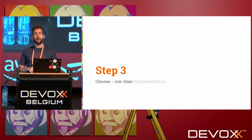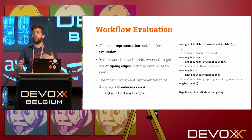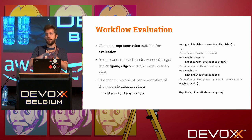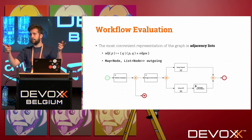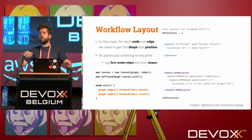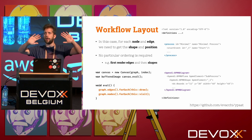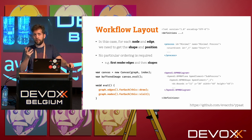Step three: choosing a runtime representation. For evaluating a workflow, a good runtime representation is an adjacency list — basically a map where for each node you get all the outgoing edges, then visit the next nodes. For workflow layout, you don't need something visitable — you probably want to draw edges first and then lay the nodes on top.